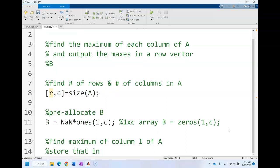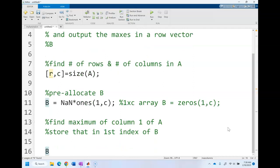The first index of B - so B(1) - so we want to store something in B(1), so it goes on the left side. Equals what do we want to store in B(1)? The maximum of the first column of A. So the maximum of A, not all of A, just the first column. We say the first column by saying all the rows, first column.